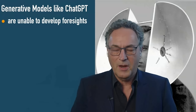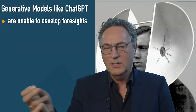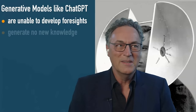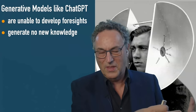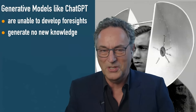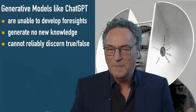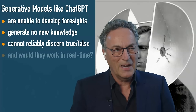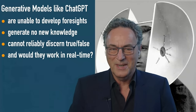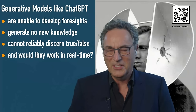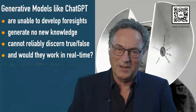Here's a big question about generative models like ChatGPT: they are definitely unable to develop foresight — ChatGPT cuts off at 2021 for data, so foresight is not part of the program yet. They generate no new knowledge — just what they find, they reorganize and regurgitate. They also can't really discern true or false very easily. If they were to do that, would it still work? And how would that work in real time like a search engine? Probably not at all, given the infinite base of potential.